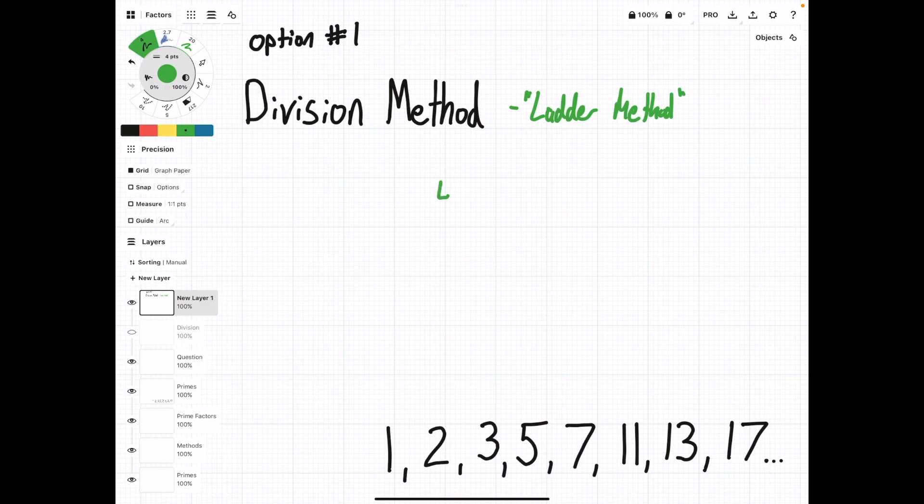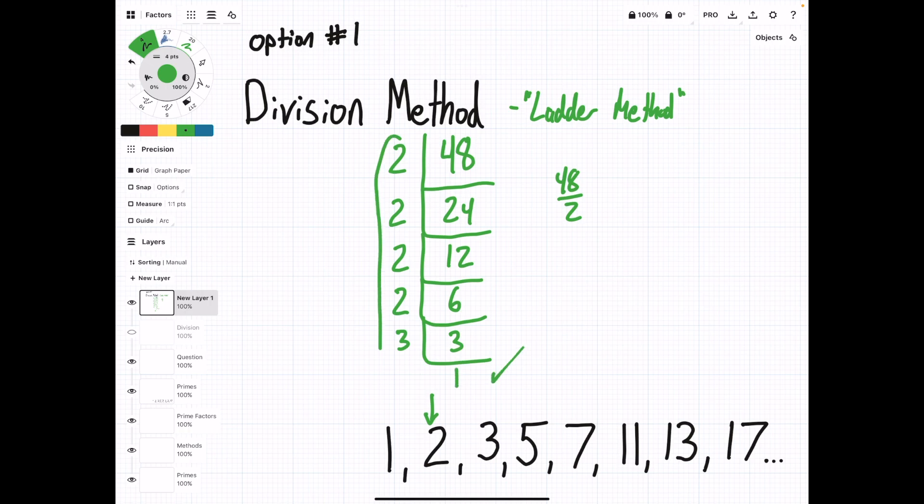We can work on a few others using this division method. So let's say we have 48. So again, we always start with 2. So we're going to draw a line like this, put 2 out front. Then 48 divided by 2 is 24. Now we know we can divide 24 by 2 again because it's even. So 24 divided by 2 is going to be 12. And we can do it again. So 12 divided by 2 is 6. We can divide this again. So 6 divided by 2 is 3. And then we drop a 3 here. 3 divided by 3 is 1. We are done. So prime factors of 48 are 2, 2, 2, 2, and 3.